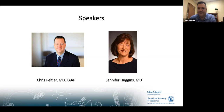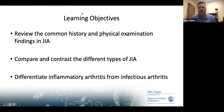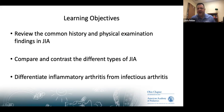Welcome everybody. Thank you all for taking an hour to join us this morning, and a special thank you to Dr. Huggins for being our content expert for this series. This is the first in a series of four webinars the Ohio Chapter is doing on Juvenile Idiopathic Arthritis. Our learning objectives for this morning: we're going to review the common history and physical exam findings in JIA, compare and contrast the different types of JIA, and differentiate inflammatory arthritis from arthritis from infectious causes.